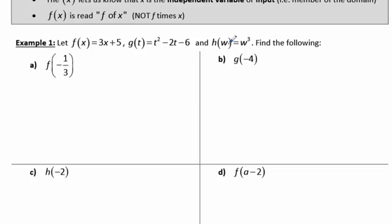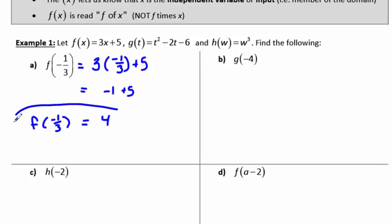So in part a, when we write f of negative 1 third, we're saying take negative 1 third and plug that value into your function. So my function is equal to 3 times x. That negative 1 third is going to replace our x plus 5, and we're going to simplify. 3 times negative 1 third is negative 1 plus 5. So f of negative 1 third is 4.